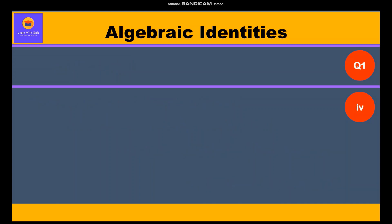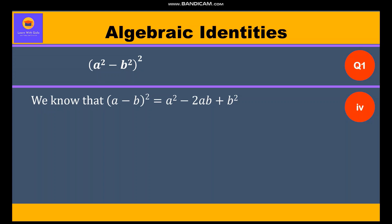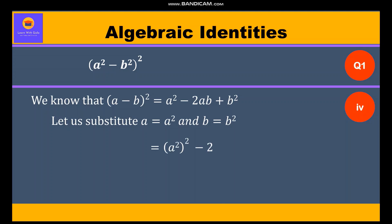Now we shall move to our next part: (a² minus b²) whole square. We know (a minus b) whole square equals a squared minus 2ab plus b squared. Let us substitute a equal to a² and b equal to b². So (a² minus b²) whole square equals (a²)² minus 2 times a² times b² plus (b²)², which gives us a⁴ minus 2a²b² plus b⁴.